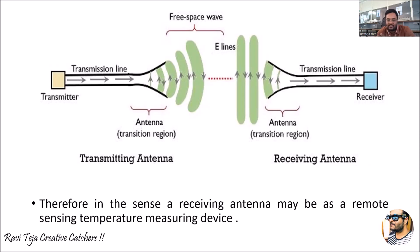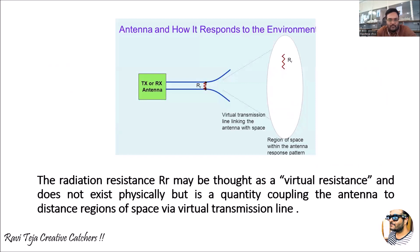Therefore a receiving antenna may be likened to a remote sensing or temperature-measuring device. Whatever signal is transmitted into free space will carry some sort of radiation — experiencing some sort of temperature. The receiver measures that temperature and calculates the resistance — how much signal loss has occurred — and based on that the received signal can be estimated. This receiving antenna will have a virtual resistance considered as Rr (radiation resistance).